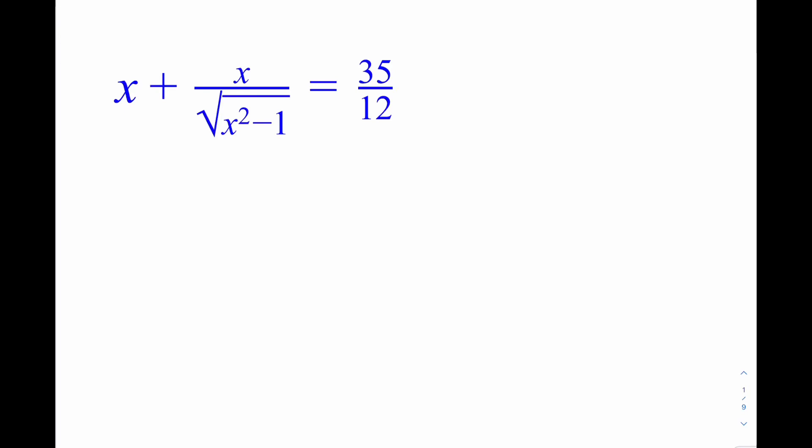Hello everyone. In this video we're going to be solving an equation — you want to call it rational, radical, both, whatever you want to call it. This is our equation: x plus x divided by square root of x squared minus 1, is equal to 35 over 12, and we're going to be solving for real x.